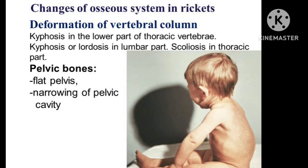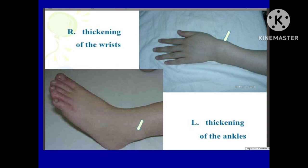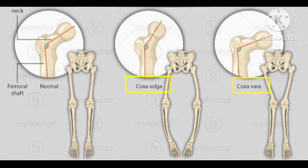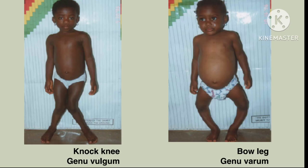Back signs may include scoliosis, kyphosis, or lordosis. Signs in the extremities include enlargement of wrists and ankles, valgus or varus deformities, anterior bowing of the tibia and femur, coxa vara, and leg pain.